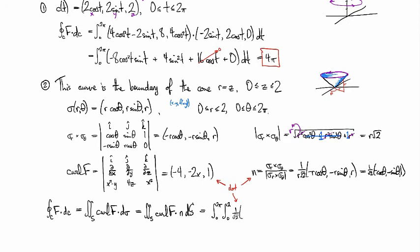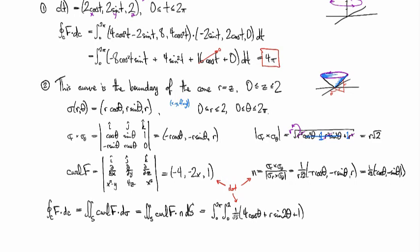let's see. So we've got 1/√2 and 4 cosine theta plus R sine 2 theta plus 1. I use a trig identity there. And then we've got √2 R dr dtheta from our dS.